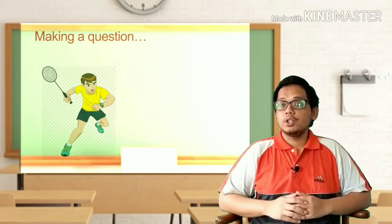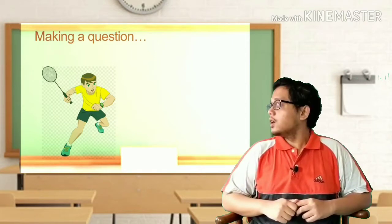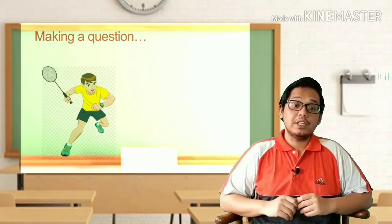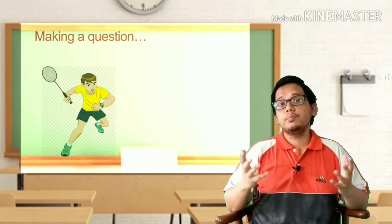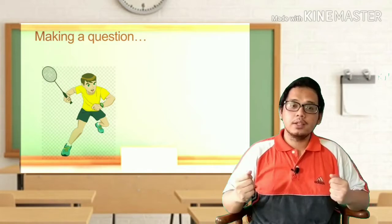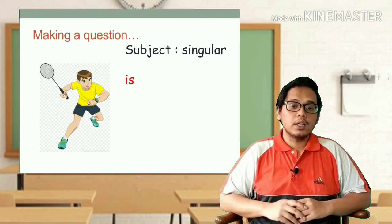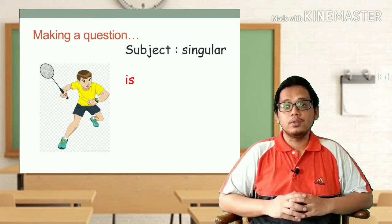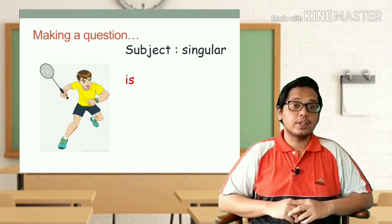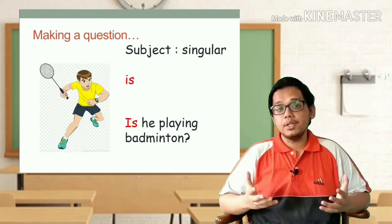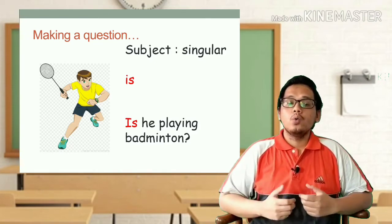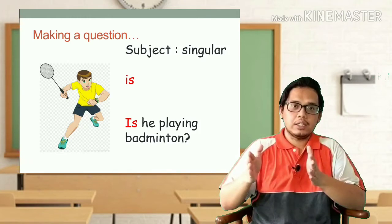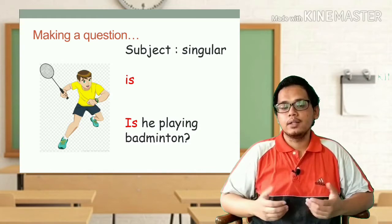Now look at the picture on the screen. Can you tell me — the subject of the picture, is it singular (one) or is it plural (many)? Yes, the subject of the picture is singular. So when it is singular, we must use 'is'. For example: Is he playing badminton? We use 'is' in front of the question, and then follow with 'he' because the subject is a boy or man.